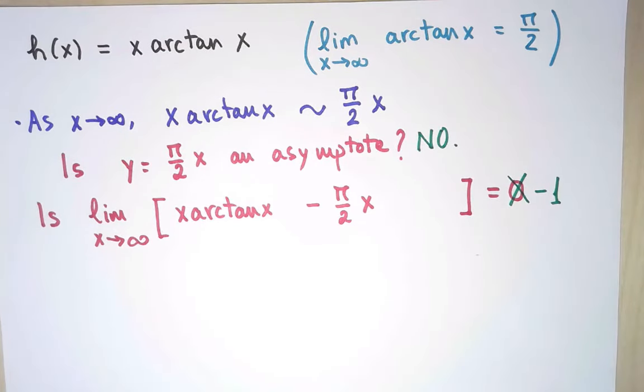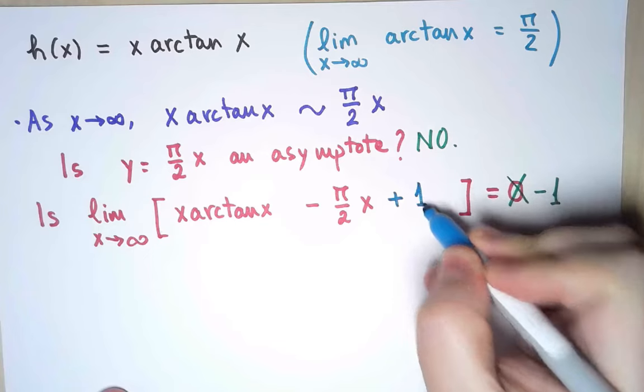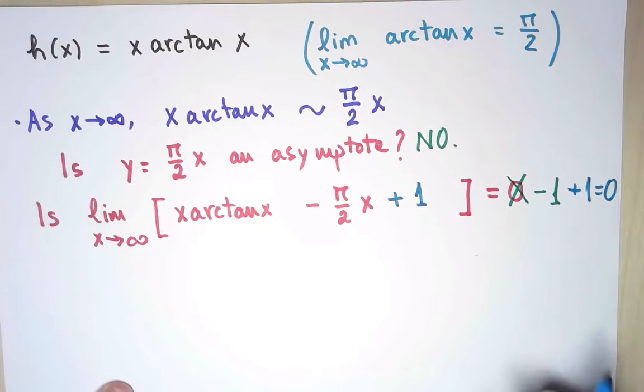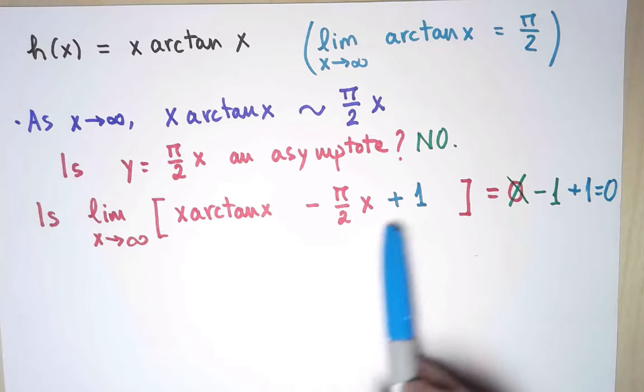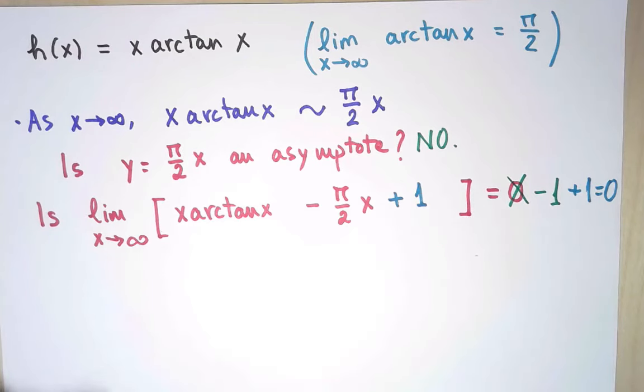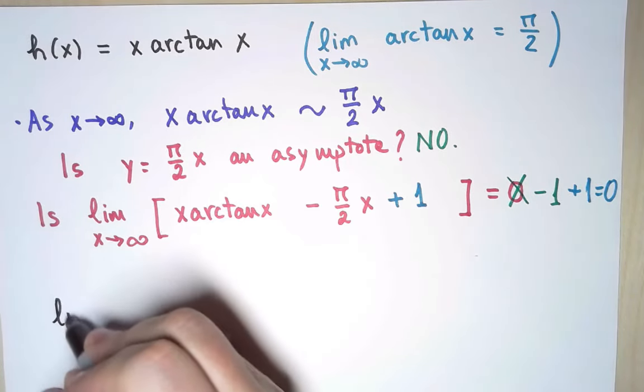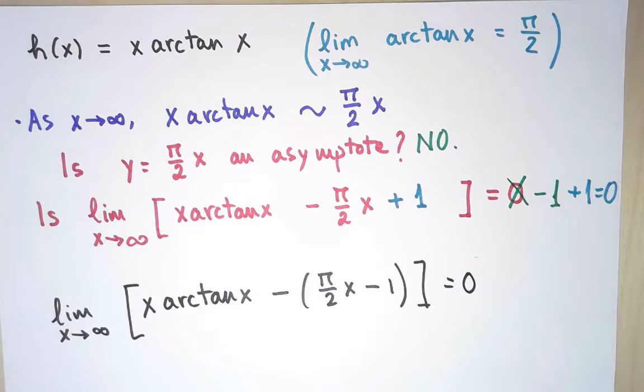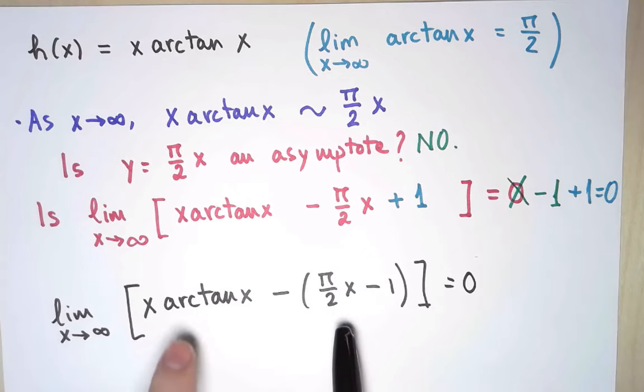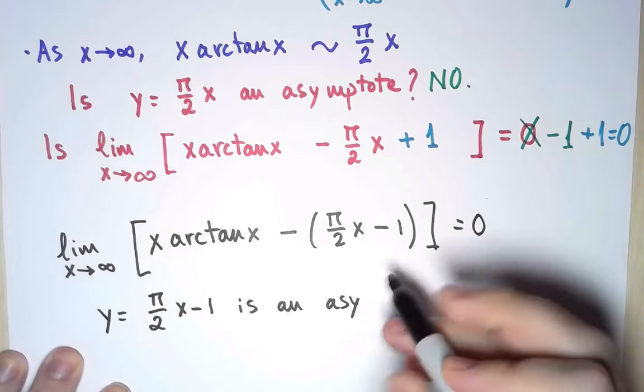But not all is lost, because notice what I can do now. If I add 1 on the left and on the right, I do get limit zero. So it turns out that my function is not getting close to just π over 2 times x, but shifted by 1. Or in other words, I can rewrite this as follows. And I have proven that the limit as x goes to infinity of my original function minus π over 2 x minus 1 is zero. In other words, the vertical distance between the graph of my function and the graph of this line approaches zero as x goes to infinity. By definition, I have found an asymptote.